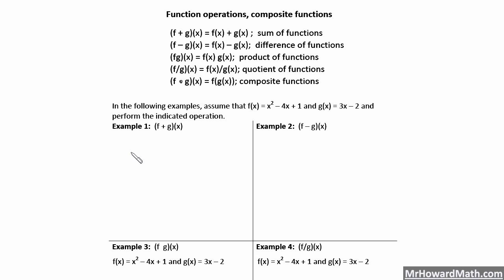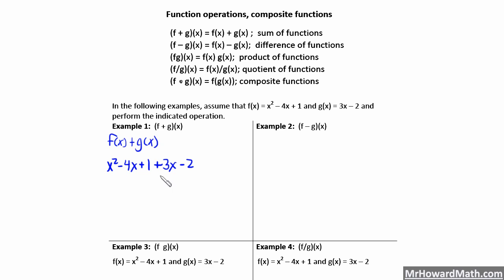We're going to add these two functions — f of x plus g of x. We take our f of x function, which is x squared minus 4x plus 1, and add to it plus 3x minus 2. Combining like terms: the only squared term is x squared, negative 4x plus 3x is minus x, and 1 minus 2 is negative 1. So f plus g of x gives us x squared minus x minus 1.